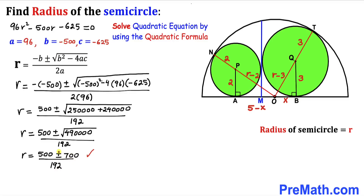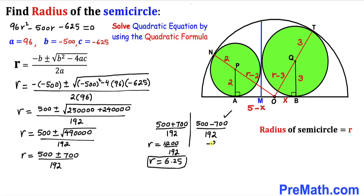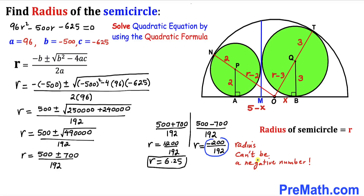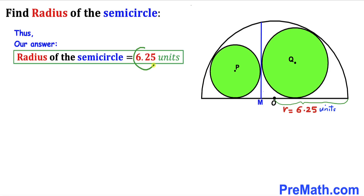Splitting into the two cases: the positive sign gives r = 1200 / 192 = 6.25 units. The negative sign gives r = −200 / 192, which is a negative number. Since the radius cannot be negative, this value is rejected. Therefore, the radius of the semi-circle turns out to be 6.25 units.